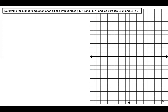The first thing we need to do is plot or sketch the given parts — the vertices and co-vertices — on the Cartesian plane. Vertex 1 is located at (negative 1, negative 1), vertex 2 is at (9, negative 1), co-vertex 1 is at (4, 2), and co-vertex 2 is at (4, negative 4).